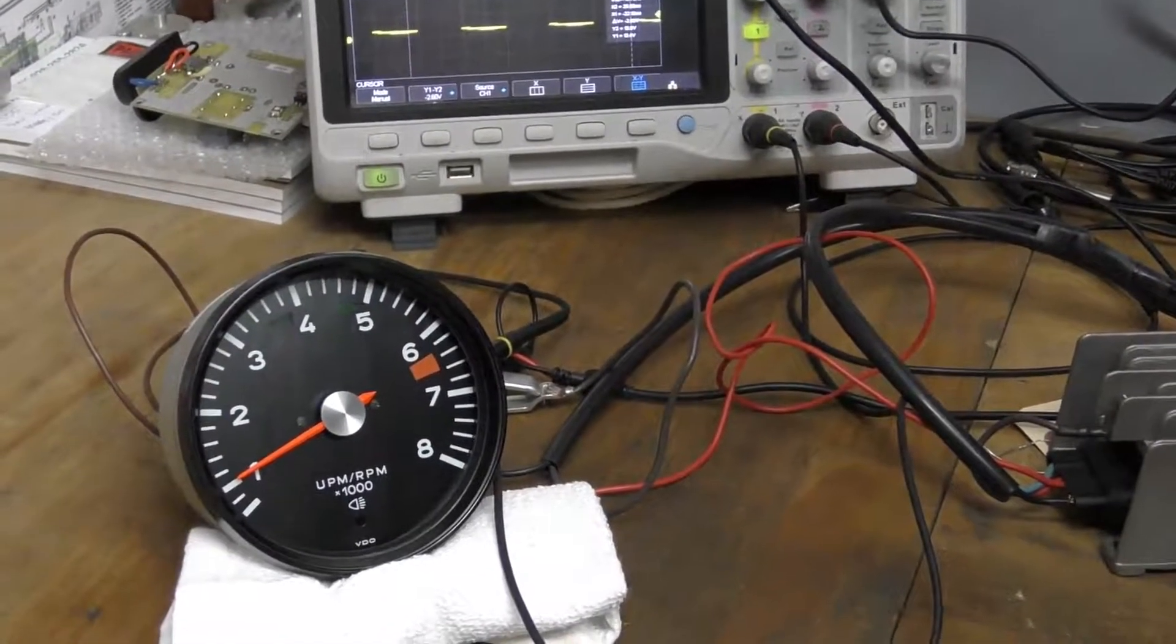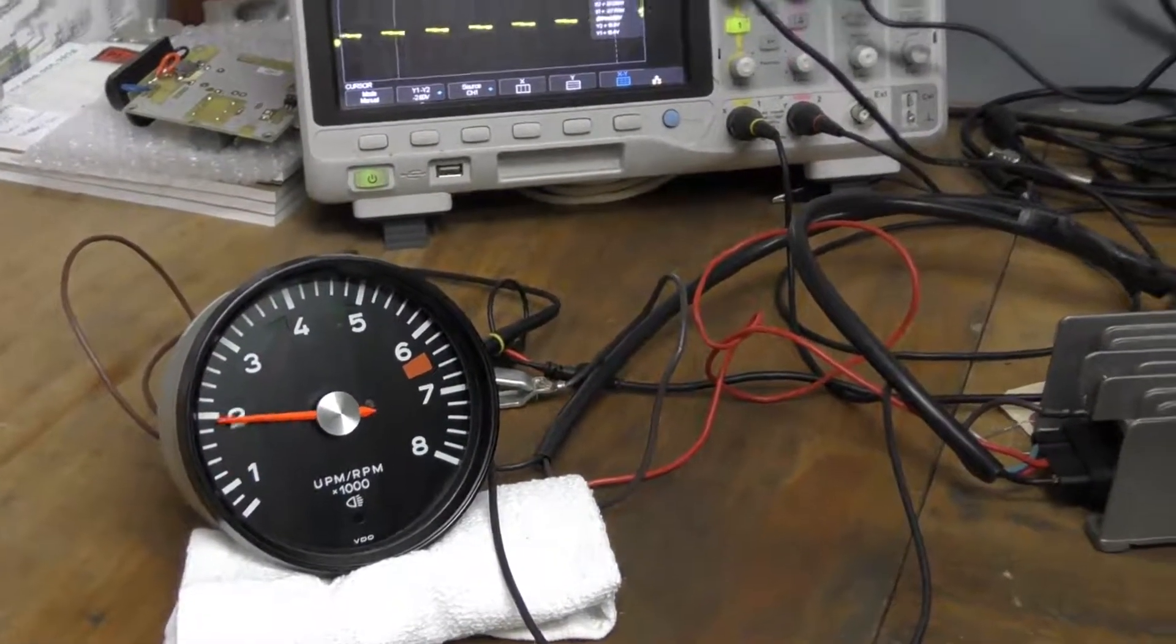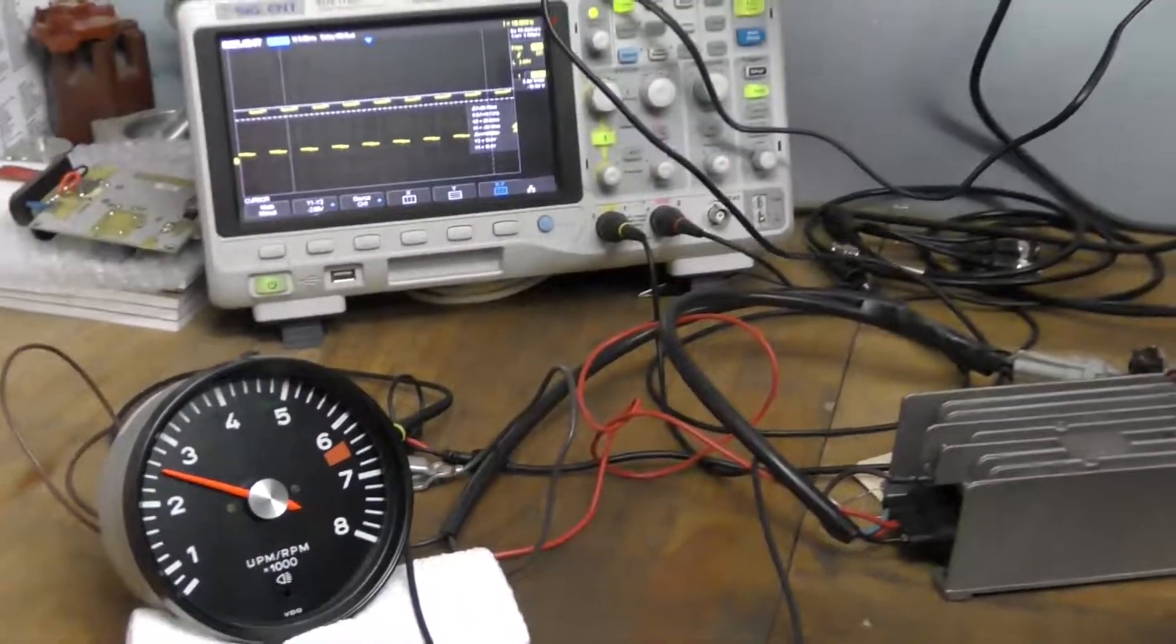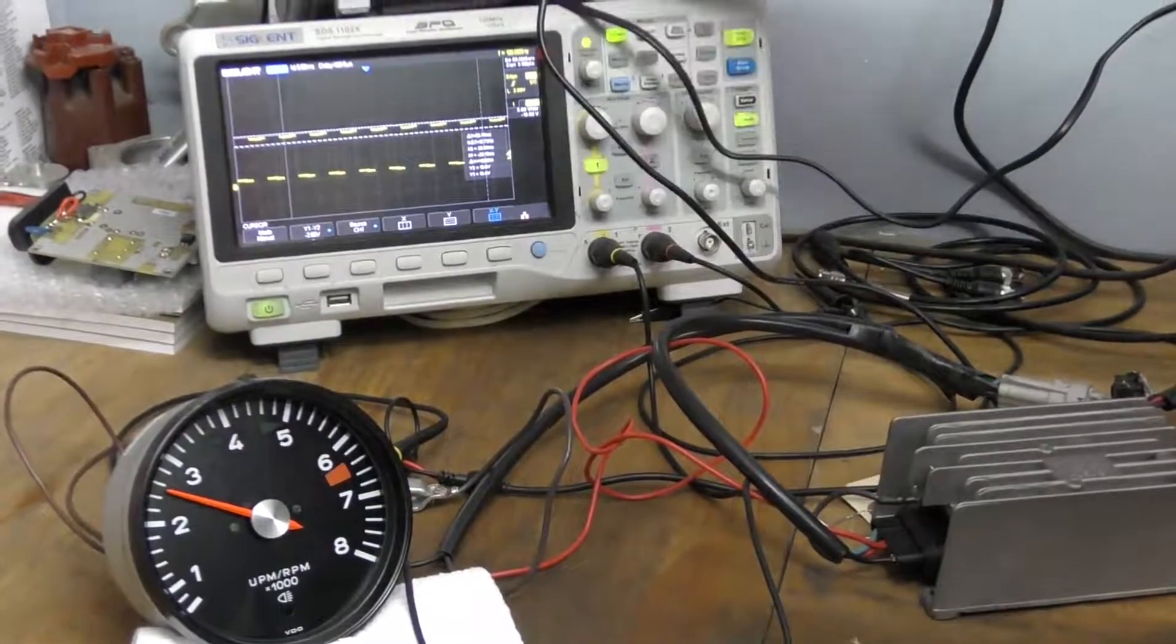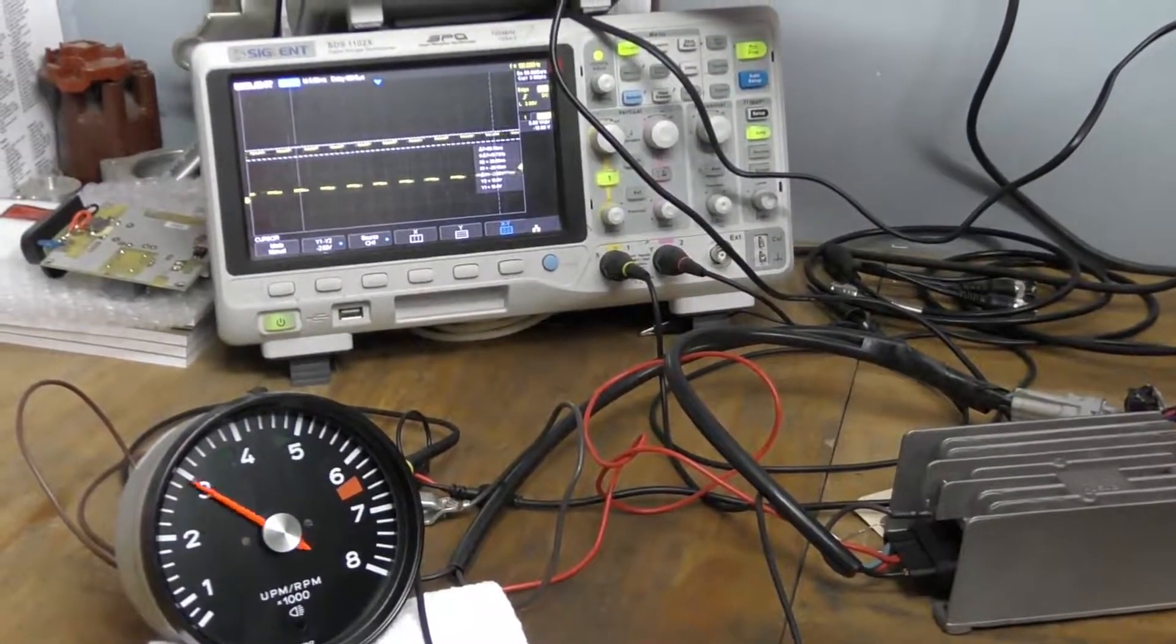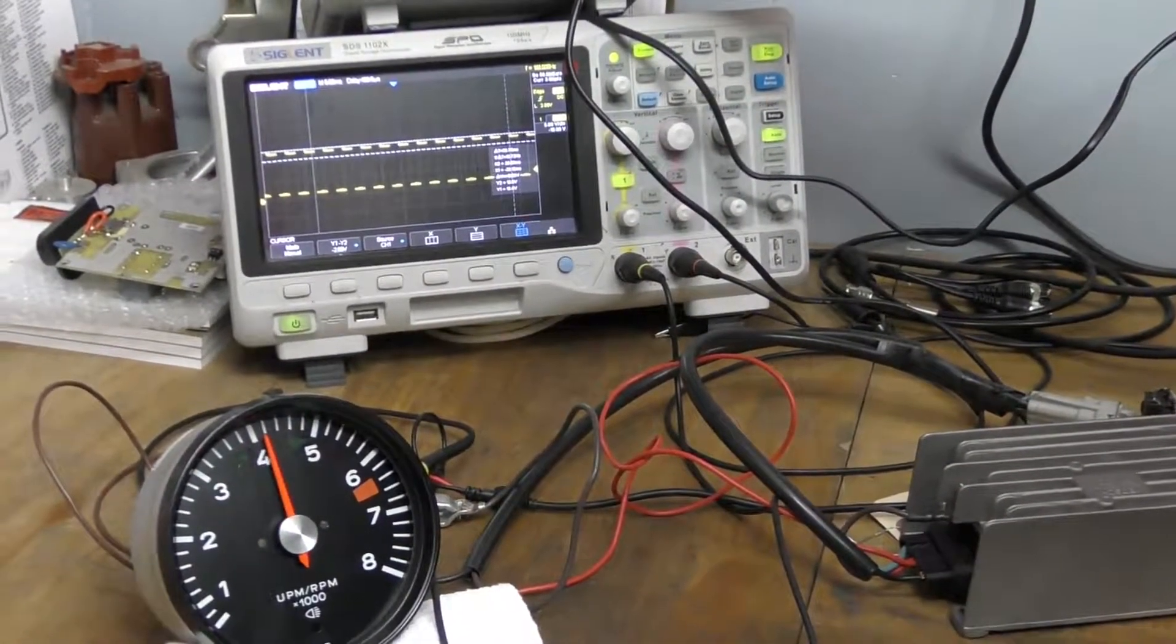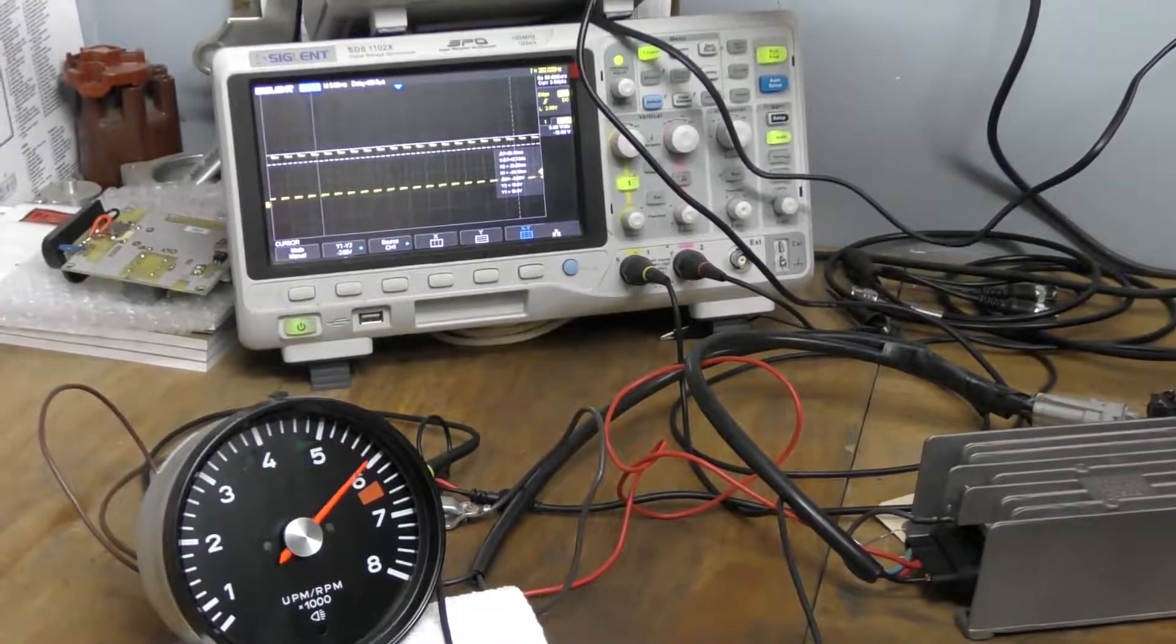In the same manner, then to rev it up I'm just going to change the amplitude. So at 2,500 RPM this is what the ignition points would be looking like, then 4,000, all the way around to 6,000, and then just coming back down.